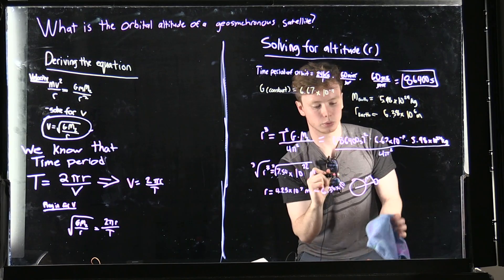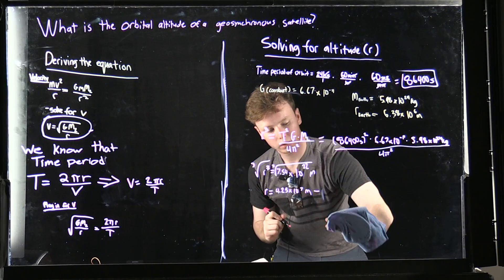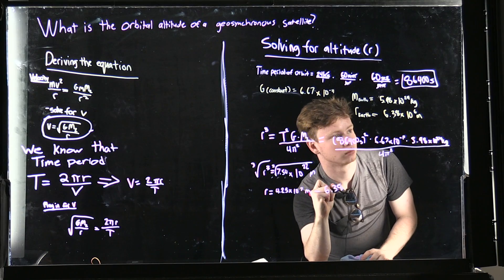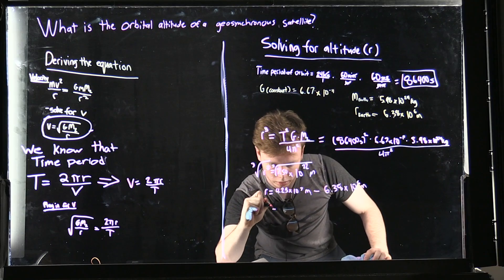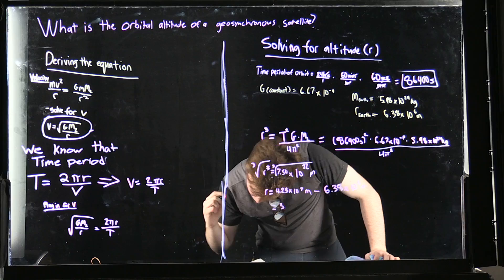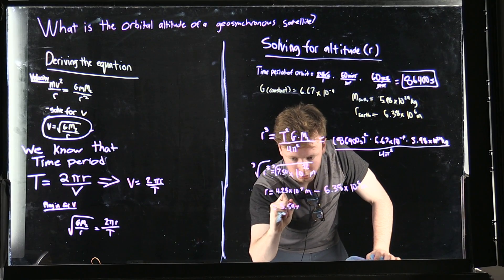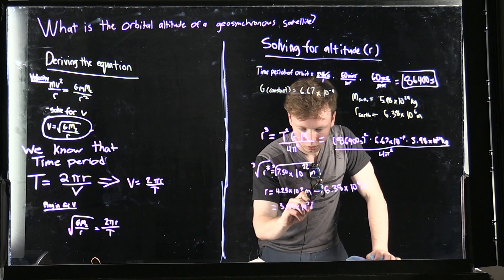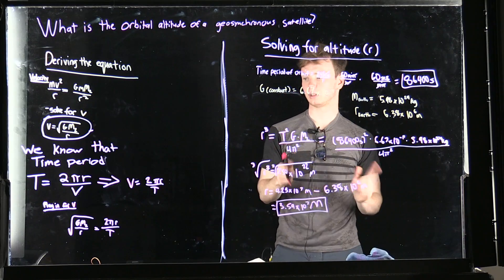Apologies for the... let me start real quick. 6,400... And we end up with a radius of 3.59 times 10 to the 7th meters. And that's the answer.